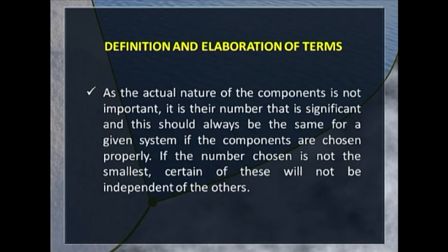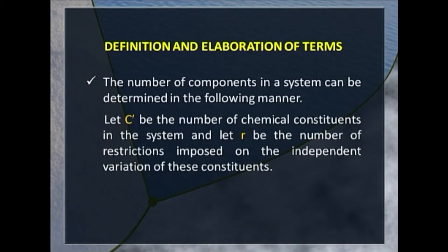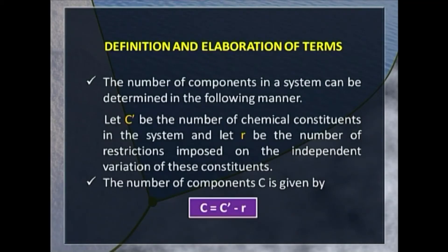The actual nature of the components is not important; it is their number that is significant and characteristic of the system. This should always be the same for a given system if components are chosen properly. If the number chosen is not the smallest, certain constituents will not be independent. The number of components C can be determined as follows: let C' be the number of chemical constituents and R be the number of restrictions. Then C equals C' minus R.